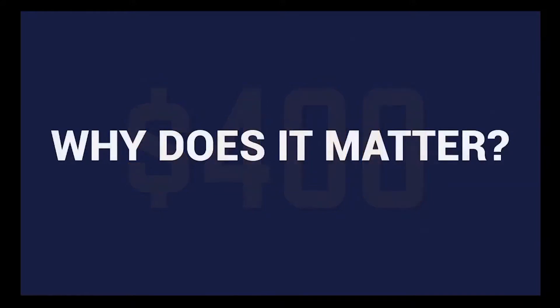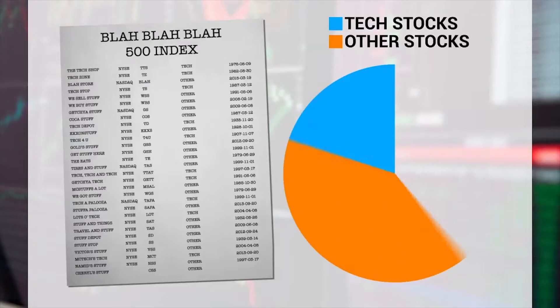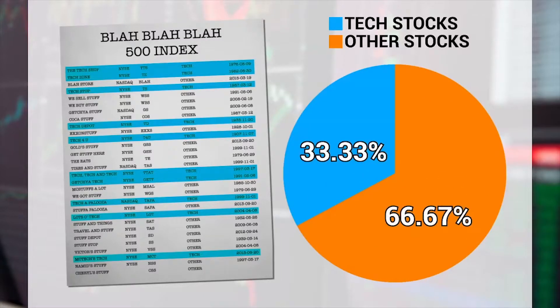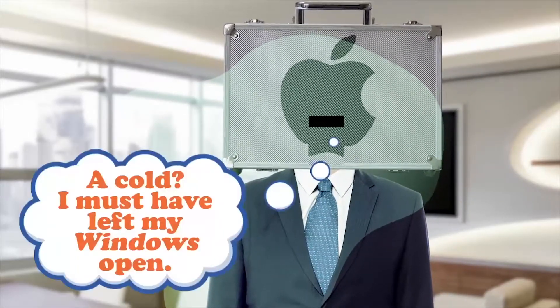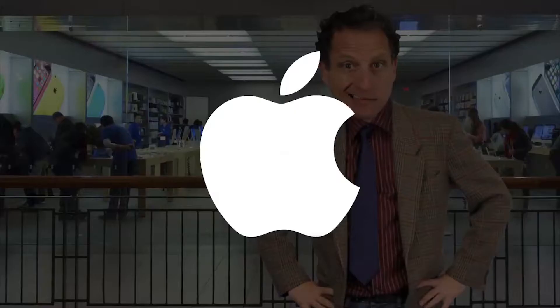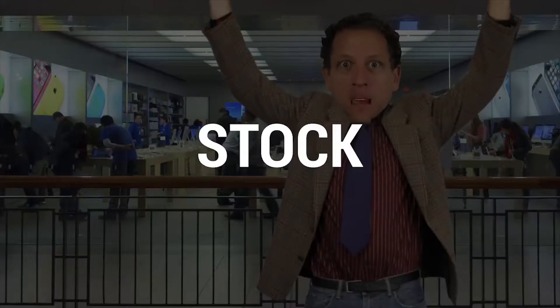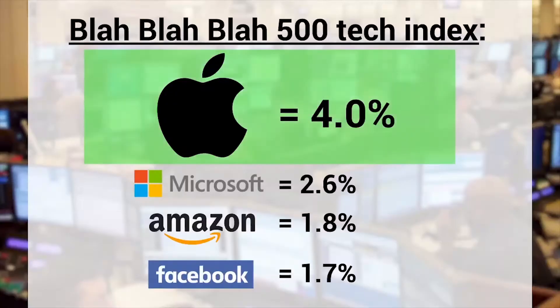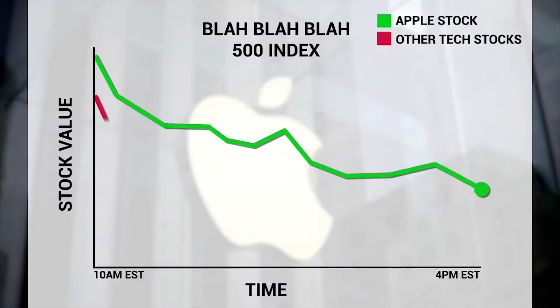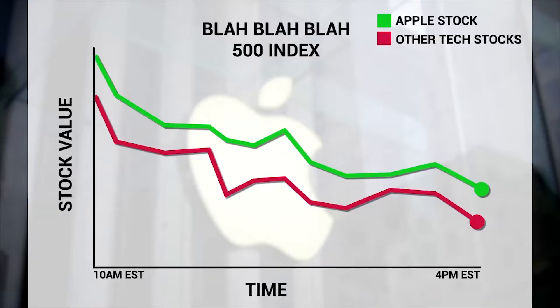So why does this Advance Decline number even matter? Why do we track it? Well, what if we had an index where technology stocks comprise like a third of the entire index? You know the saying: when Apple catches a cold, the rest of tech is infected with Ebola. It just means that Apple is a really big market cap stock, knocking on the door of a trillion bucks, so it represents a huge percentage of the tech index. When Apple stock does poorly on a given day, it tends to bring down all the other tech stocks in its wake.